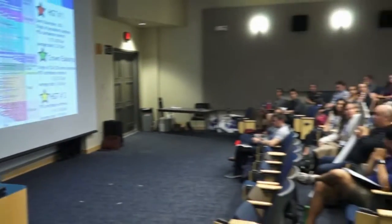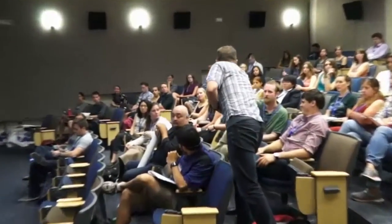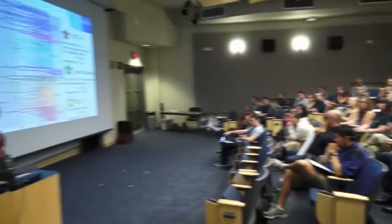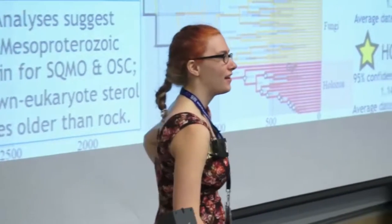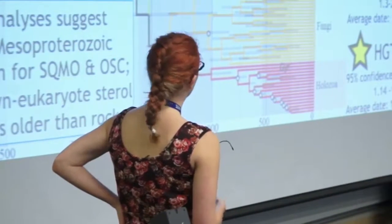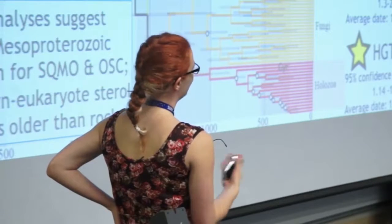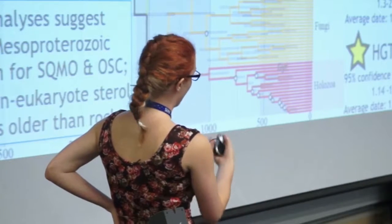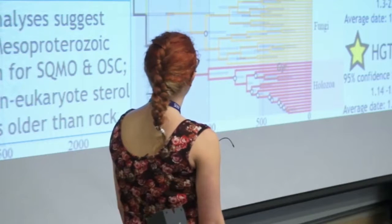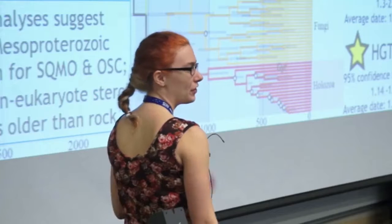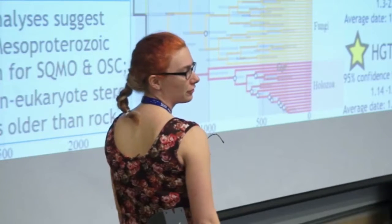Question: How conserved are these genes? How many mutations are you working with to make this molecular clock? Response: They're fairly well conserved. I don't have a precise quantitative answer, but the genes have enough variety that we reliably recover the eukaryotic species tree. So I think we can be fairly confident that what we're seeing is real, but they are fairly conserved.